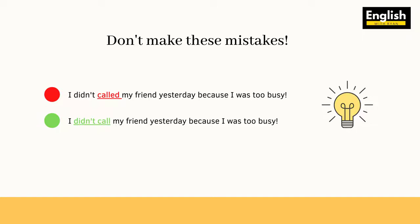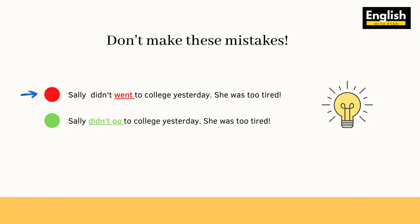Let's take a look at another example. 'Sally didn't went to college yesterday. She was too tired.' Well, the correct form is: 'Sally didn't go to college yesterday. She was too tired.' Because when you have 'didn't,' you don't need to take that verb to the past tense. So Sally didn't go.